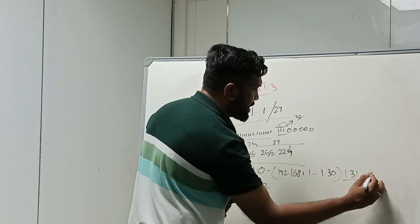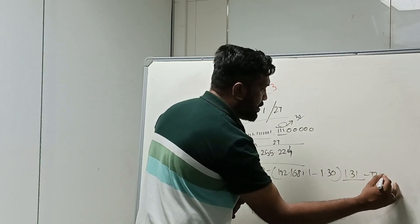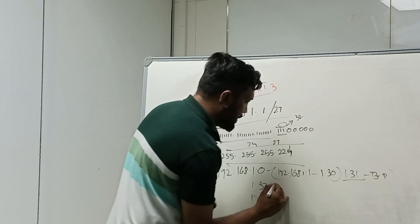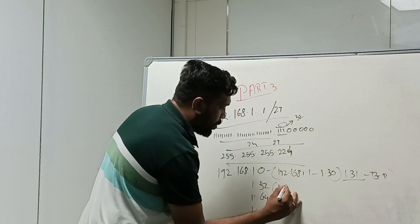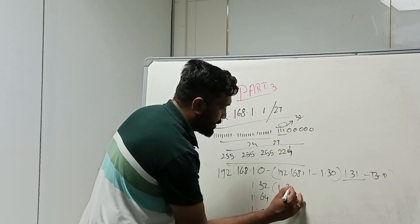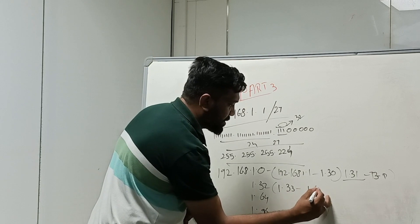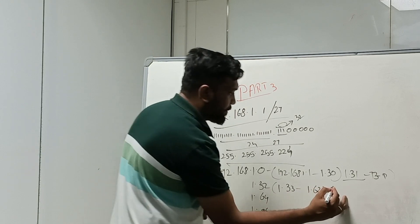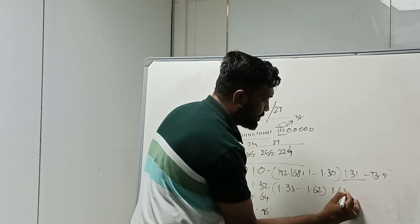The broadcast type at 1.31 is the broadcast IP. Then 1.33 starts the next range, going up to 1.62, with broadcast IP at 1.63.